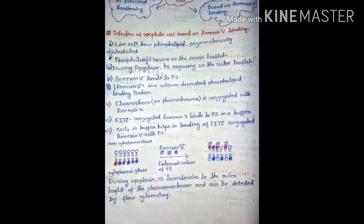When a cell undergoes apoptosis, phosphatidylserine moves to the outer leaflet of the plasma membrane. Annexin-5 binds to phosphatidylserine, and the FITC conjugated to annexin-5 allows us to detect the apoptotic cell using the flow cytometry technique.